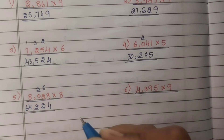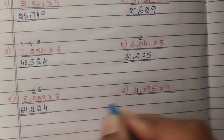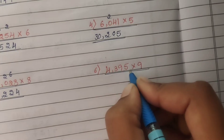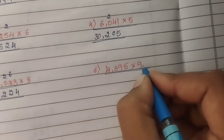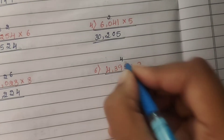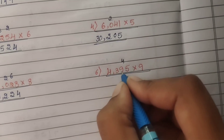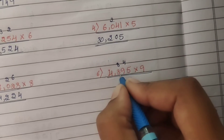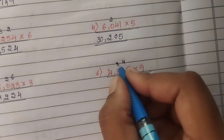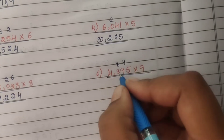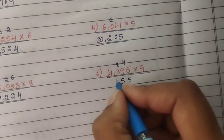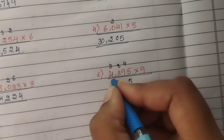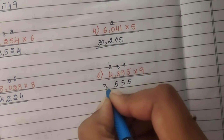Last problem of Second Main: 4,395 into 9. 9 fives are 45, carry 4. 9 nines are 81, 81 plus 4 is 85, carry 8. 9 threes are 27, 27 plus 8 is 35, carry 3. 9 fours are 36, 36 plus 3 is 39. Answer: 39,555.